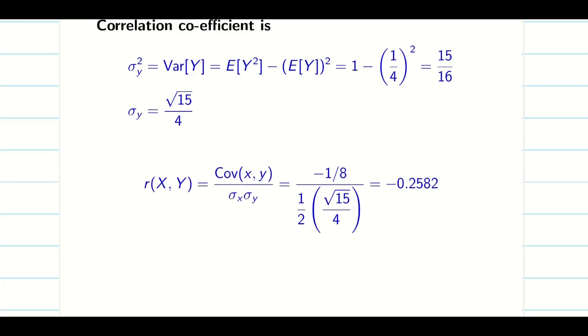Now we know the formula for correlation: covariance of X,Y divided by sigma X into sigma Y. Use your calculator and find the solution. My r value is minus 0.2582. Now we conclude the correlation is negative.